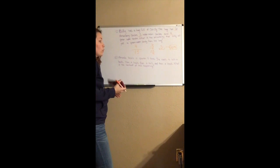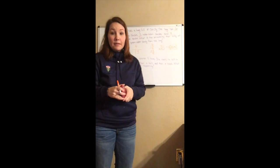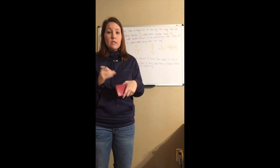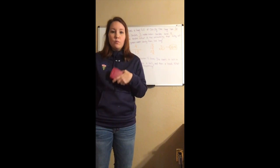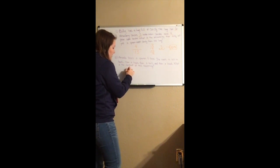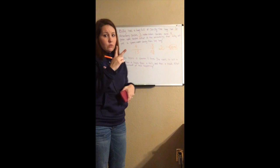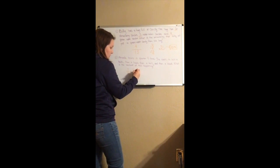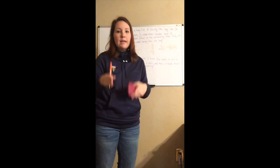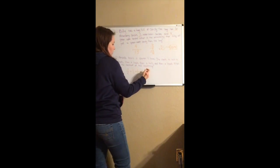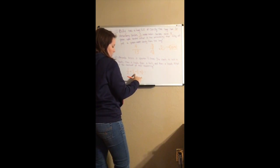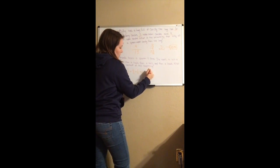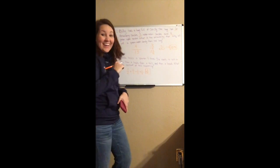The second problem is compound probability. Amanda tosses a quarter four times and wants heads, heads, tails, heads in that order. Each toss has a probability of one over two. We multiply all four: one-half times one-half times one-half times one-half. Two times two is four, times two is eight, times two is sixteen — so the probability is one over sixteen. And that's it for probability.